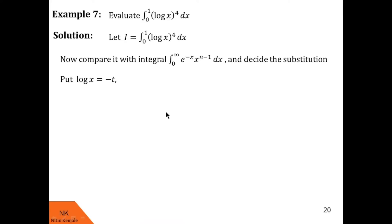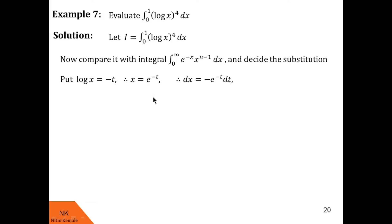Here the suitable substitution is log x = -t. Then taking exponential of both sides, we have x = e^(-t). Therefore dx = -e^(-t) dt. Now let us find the limits for t by substituting the x limits into this equation. When x = 0, we see e^(-t) = 0, therefore t = infinity. Similarly, when x = 1, we see e^(-t) = 1, therefore t = 0.